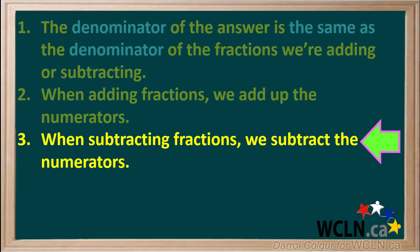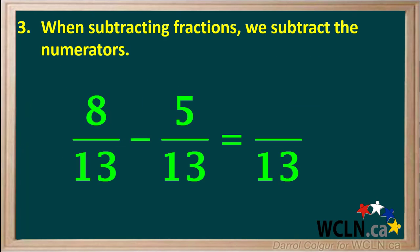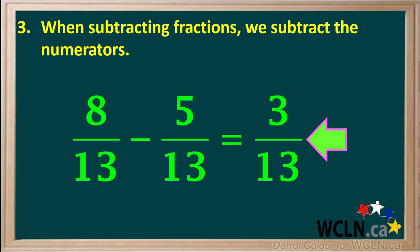If we're subtracting fractions, we just subtract the numerators in the fractions we're starting with to get the numerator in our answer. For example, if we're subtracting 5 thirteenths from 8 thirteenths, we subtract the numerator 5 from the numerator 8 to give us the numerator 3 in our answer. So, 8 thirteenths minus 5 thirteenths is equal to 3 thirteenths.